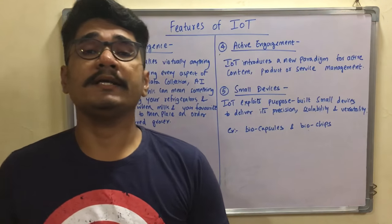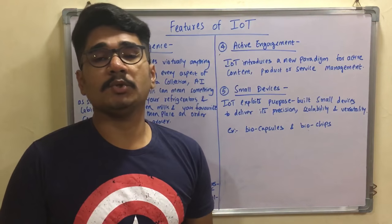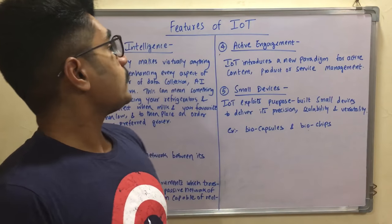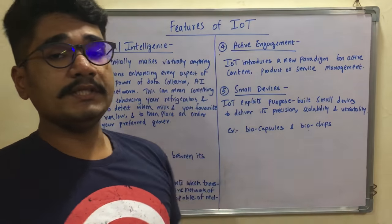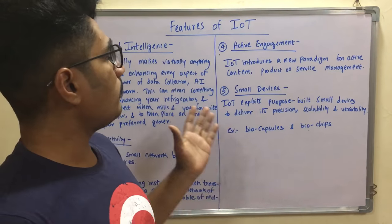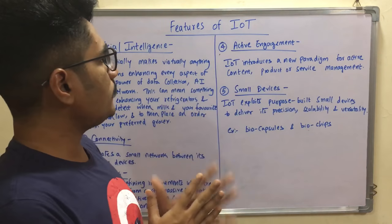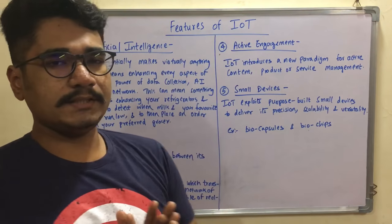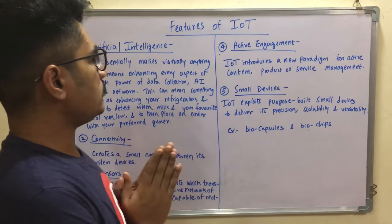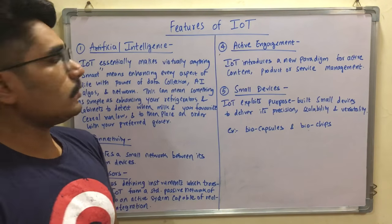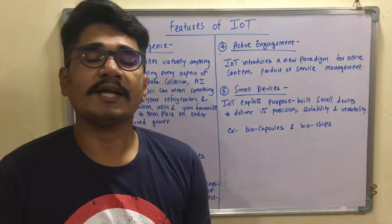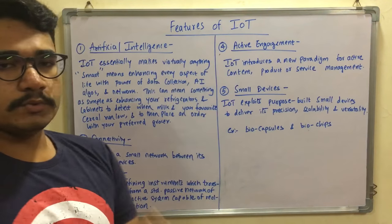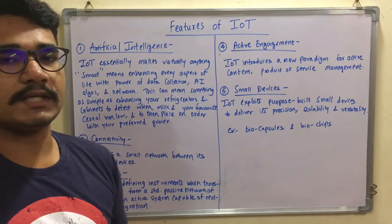In the last video, I discussed the introduction to Internet of Things. Today we will be seeing what are the features of IoT. There are many features, but in today's video I will be featuring only five basic or predominant features which are essential for IoT. Let's get started — this is Raj, and you're streaming on the Steady Beast.